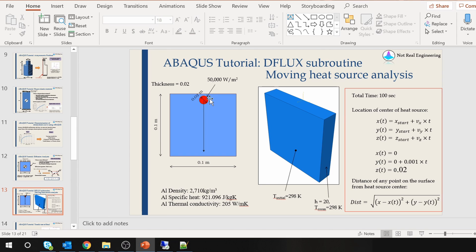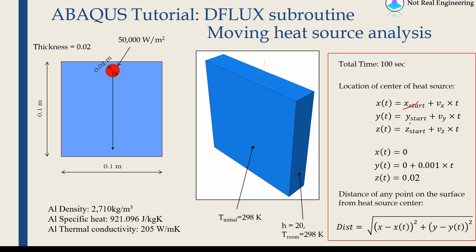So first we have to come up with an equation for the heat source. If you consider the center of the heat source and give its coordinates as x, y, and z, then x, y, and z will change with respect to time by these equations. The center of the heat source will change using these equations. In our example, the heat source is moving only in the y direction, so for x and z, Vx and Vz are 0, therefore those coordinates will not change. Our x_start is 0 so it will remain 0, z_start is 0.02 so it will also remain 0.02.